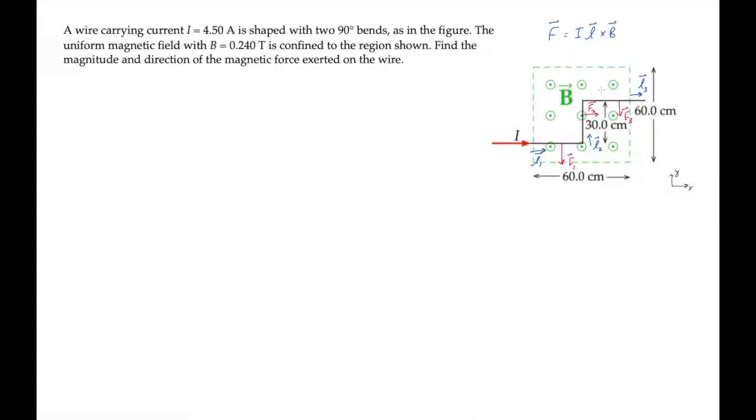Now I'll come over here and calculate the force vectors. First on the two horizontal segments. I'll call that force 1, 3. The force on segments 1 and 3. That has a magnitude of the current times the sum of the two lengths times the magnetic field magnitude.